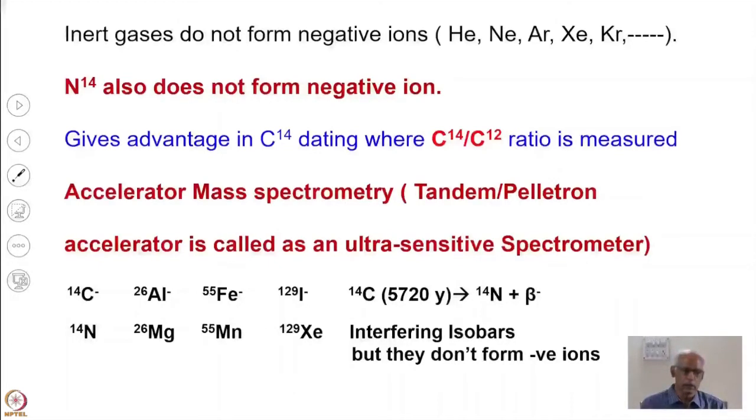And not only that, since these inert gases don't form negative ions, that is again an advantage for various kinds of measurements. We have carbon-14 negative and aluminum-26 or iron-55 or iodine-129. They are used in this because there is no interference from these isobars. Because there is no interference from isobars, that is why we are able to get much higher accuracy in the measurements.